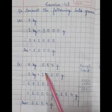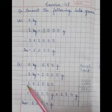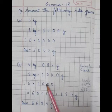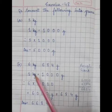So let's follow the same step. 1 kg is equal to 1000 gram. Therefore, 6 multiply by 1000 is equal to 6000 gram.